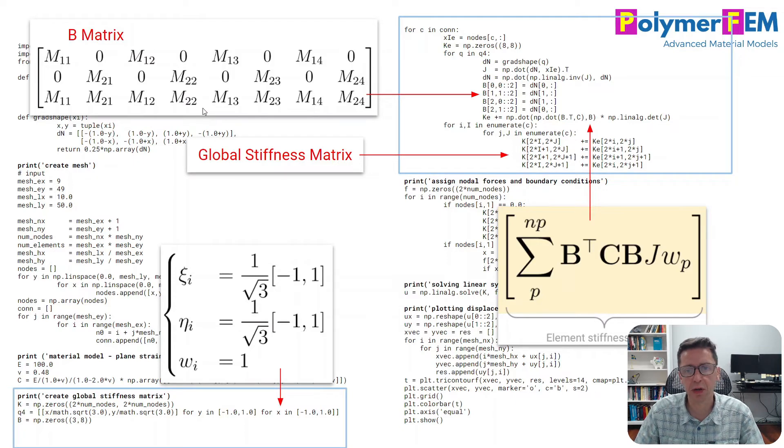And then we go through each integration point and we calculate the B matrix, which is given by this form here. So this I also showed in one of my earlier videos where these terms come from. And in Python, you can do this in a kind of a tricky but clever way. When you have a colon colon inside this construct here, it means that it's every second term. So we assign every second term using this strategy here. It's just a clever way to do it in short amount of code. And that comes from this equation here.